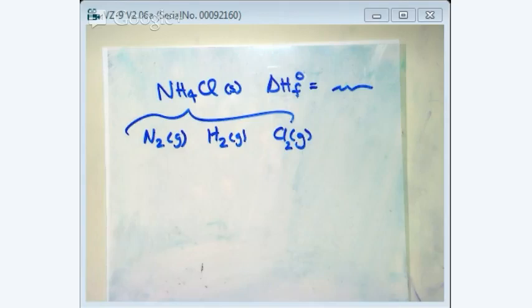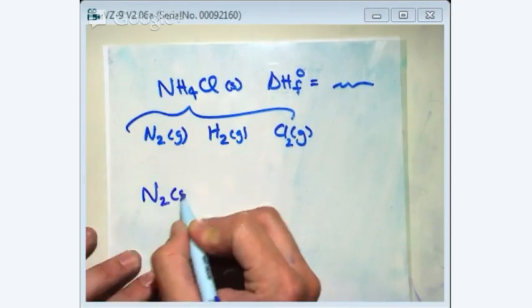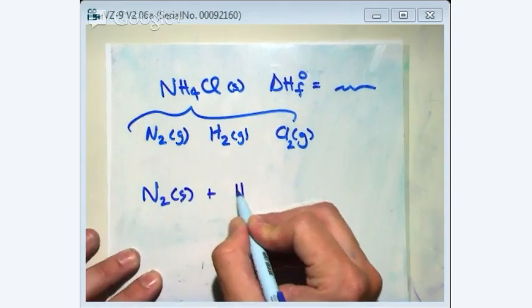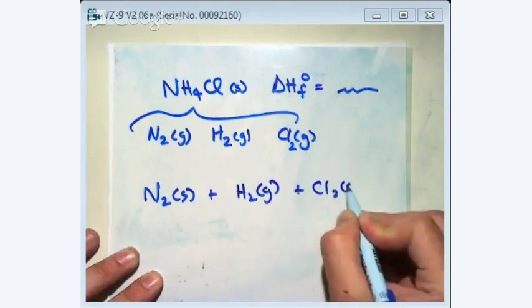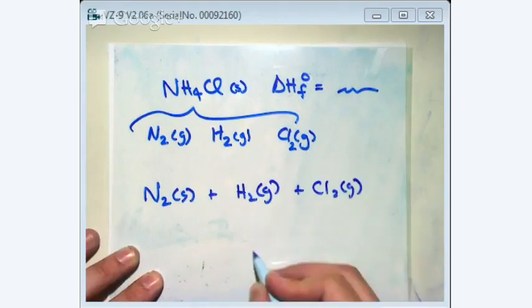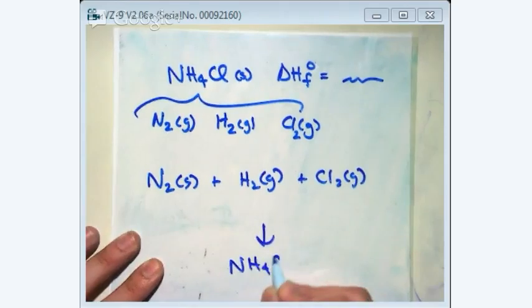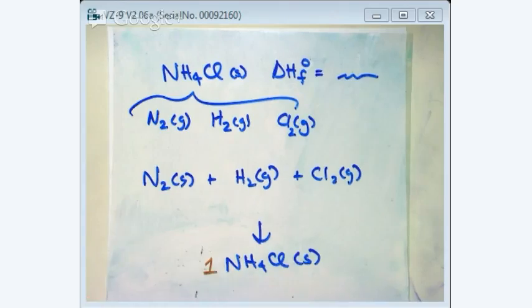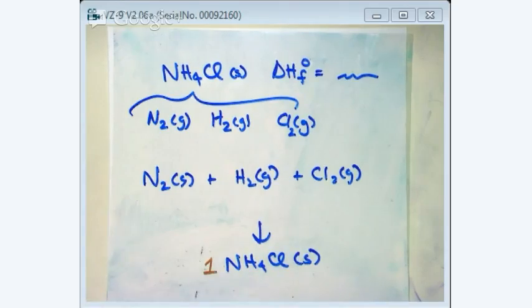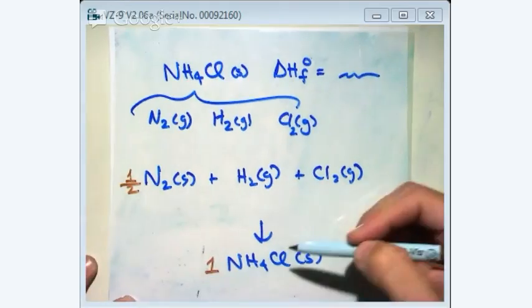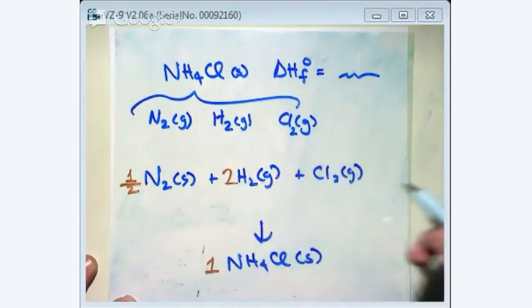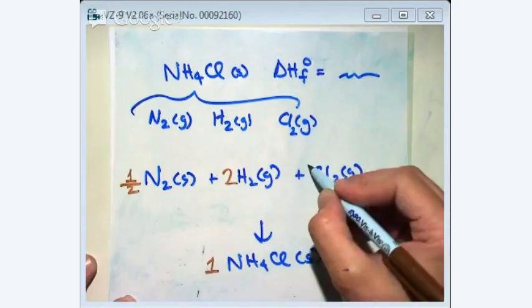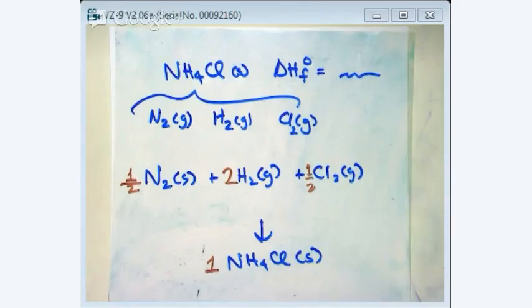That's your first step. Then the reaction would just be the sum of these. N2 gas plus H2 gas plus Cl2 gas goes to NH4Cl solid. Now you balance it. One thing you want to do when you balance it, keep the 1 right here. That's 1. This has to be 1 half. Then the H2 must be 2. And the Cl must be 1 half. And that should be answer B on that multiple choice.